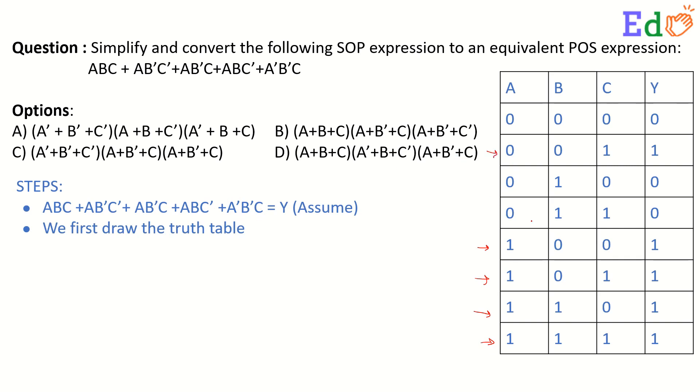So this is the truth table how we generate. All the rest outputs have to be put as 0 because it is not included in the SOP expression. So this is the truth table for this expression.